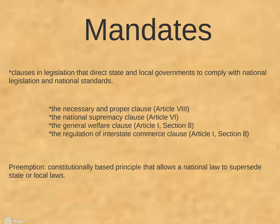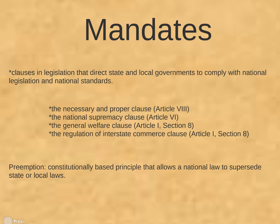Through a process known as preemption, the federal government can take away states' and localities' policy authority and impose its policy choices on state and local governments. National mandates are clauses in national laws, including grants and aid, that direct state and local governments to do something specified by national government. Many mandates relate to ensuring citizens' civil rights and civil liberties, as in the case of the mandate in the Rehabilitation Act of 1973, requiring that all government buildings — including those of state and local authorities — be accessible to persons with disabilities. When the national government assumes the entire cost of a mandate, it is a funded mandate; when the state or local government must cover all or some of the costs, it is an unfunded mandate.